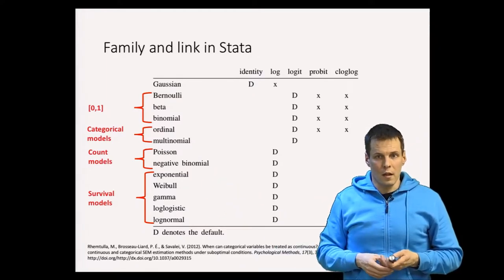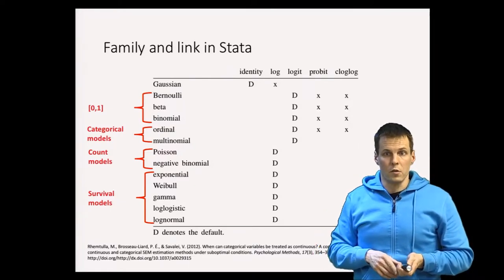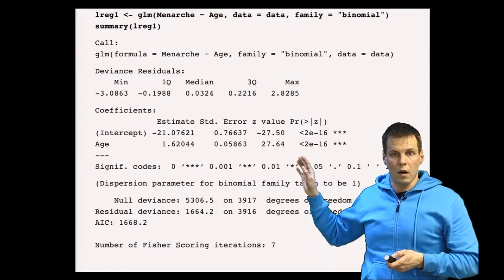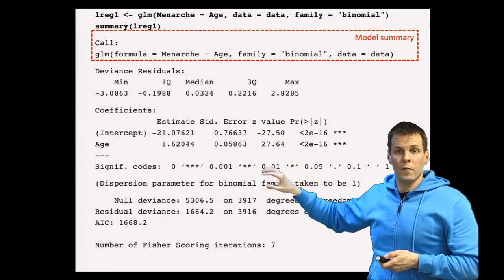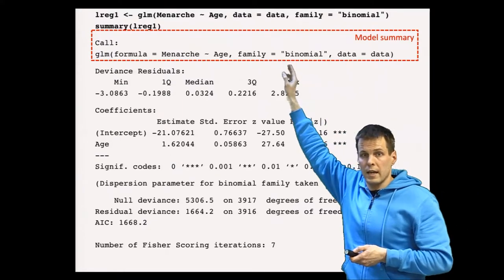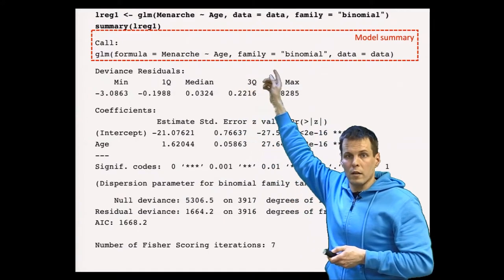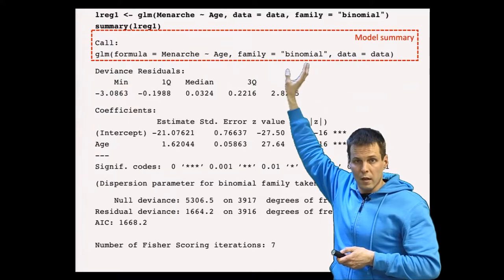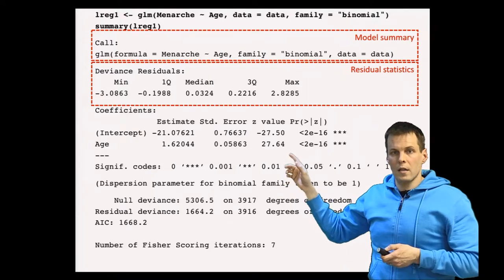Let's look at GLM results and what a GLM analysis provides in addition to standard regression output. This example is done in R, and the results look a lot like regression results from R. The model summary tells us we use the Menard's dataset predicting with age and binomial distribution, which in R means Bernoulli distribution with a logit link — logistic regression analysis.